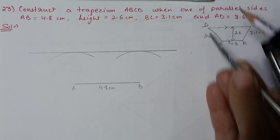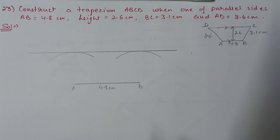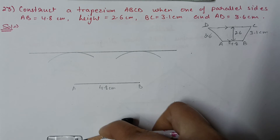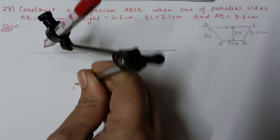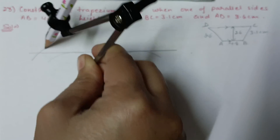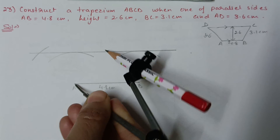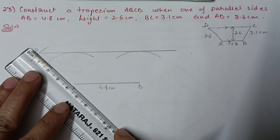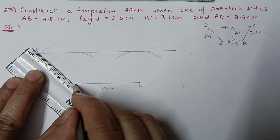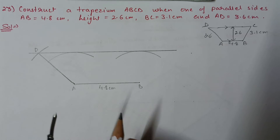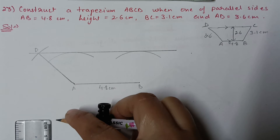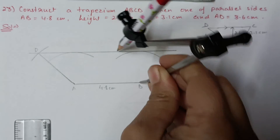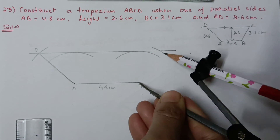To find point D, take 3.6 centimeter in the compass and from A put one arc on the parallel line — the intersection is point D. Join A to D. To find point C, take 3.1 centimeter in the compass and from B put one arc on the parallel line — that intersection is point C.